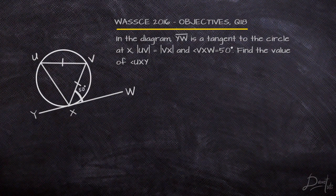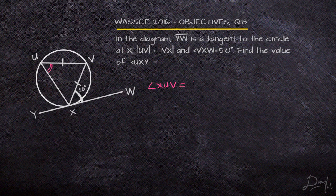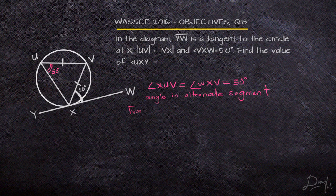First on our list is question number 18. We are given the diagram and told that YW is a tangent to the circle, and UV and UX are equal in length. We are given angle VXW to be 50 degrees and asked to find the value of UXY. Looking at this question, we can see that angle XUV is going to equal angle WXV, because the angle subtended by a tangent drawn to a circle is equal to the angle in the alternate segment.